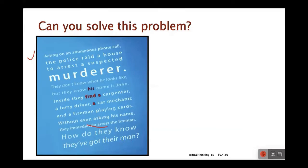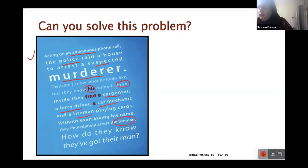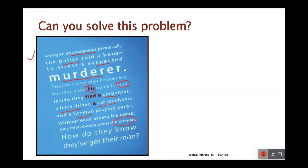All right, very good. Here's a similar problem. We have acting on an anonymous phone call, the police raided a house to arrest a suspected murderer. They don't know what he looks like, but they know his name is John. Inside the house they see a carpenter, a lorry driver, a car mechanic, and a fireman playing cards. Without even asking his name, they immediately arrest the fireman. How do they know that they got the right man? I think because the fireman usually has their name tags on their suits, maybe. Okay, all right, that's a good thought. Good.